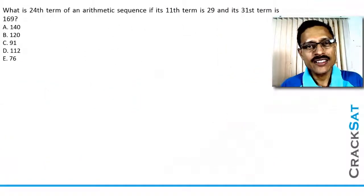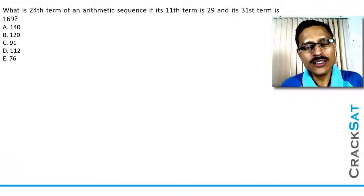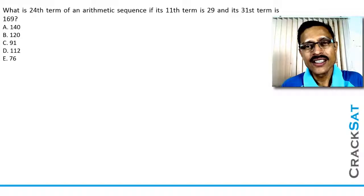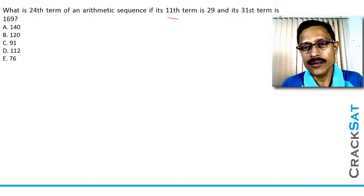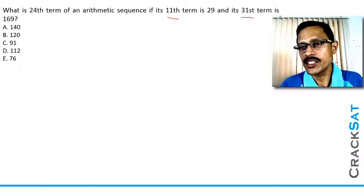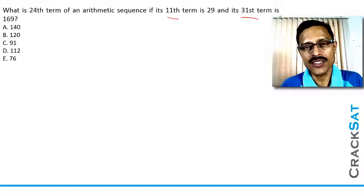The question given to us is we need to find out the 24th term of an arithmetic sequence. Given two data points, we know what the 11th term is and we know what the 31st term is. These two data points are given to us.